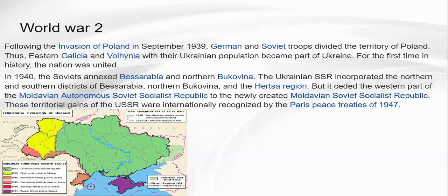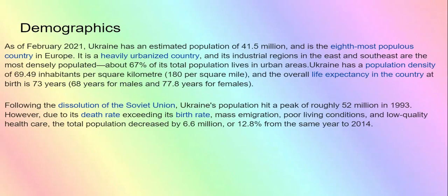As of February 2021, Ukraine has an estimated population of 41.5 million people and is the eighth most populous country in Europe. It is a heavily urbanized country, and its industrial regions in the east and southeast are the most densely populated. Since the western areas were part of Czechoslovakia, Poland, and were heavily affected by World War One and World War Two, they never really developed as much.